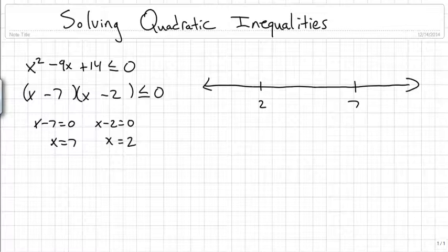And as you can see what I've done with this number line, putting those points on there I've created three regions of numbers. There's numbers that are less than 2, there's numbers greater than 2 but less than 7, and then there's numbers greater than 7.